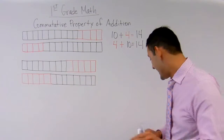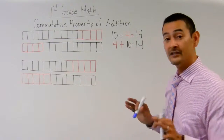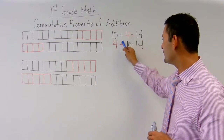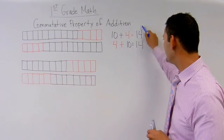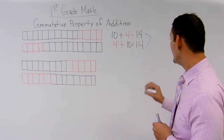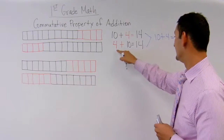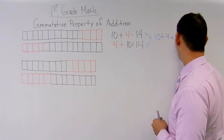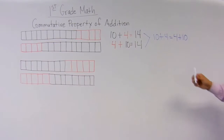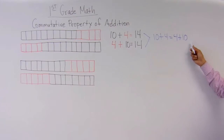Awesome, boys and girls. And now I want you to notice this, okay? Here's the commutative property of addition. It means that if we switch the numbers around, you're going to get the same answer. So this is really ten plus four equals four plus ten. Again: ten plus four equals four plus ten.